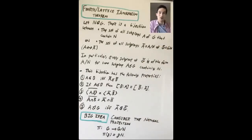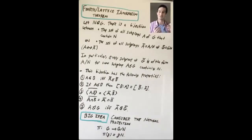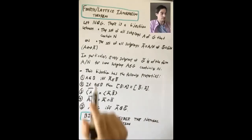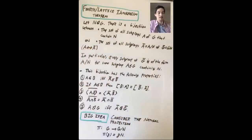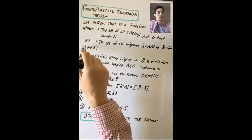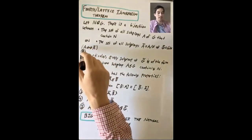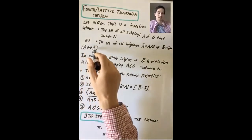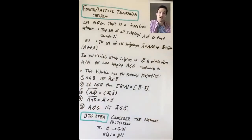This fact is really useful and comes up in research pretty frequently. So this is the bijection between subgroups of G containing N and subgroups of G-bar.